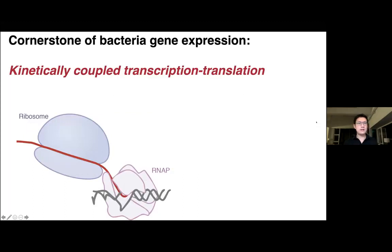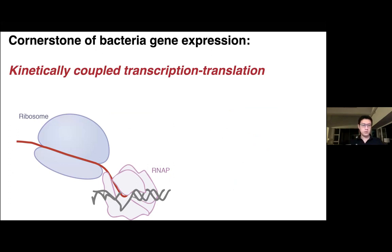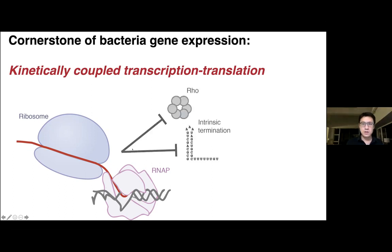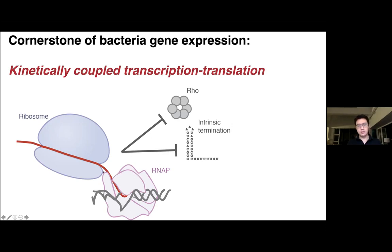More so in bacteria, the relationship between these two motors is even more intimate. Bacteria lack the nuclear envelope, so not only can transcription and translation take place at the same time, they can physically associate and be kinetically coupled — these two motors move at the same speed. Many important regulatory mechanisms are built upon the ribosome's ability to modulate the fate of the transcribing RNA polymerase. For example, a ribosome can block two main pathways for transcription termination by sterically blocking hairpin formation for intrinsic termination, or by blocking the access of the helicase Rho, which would normally grab onto the RNA and terminate RNA polymerase.